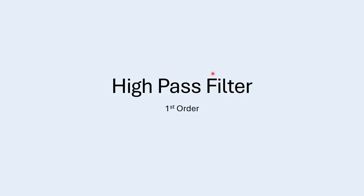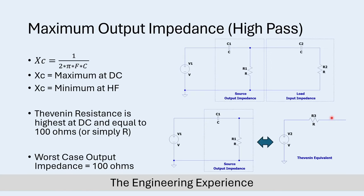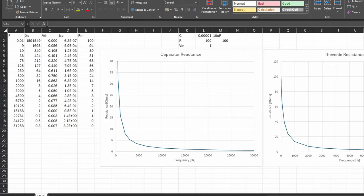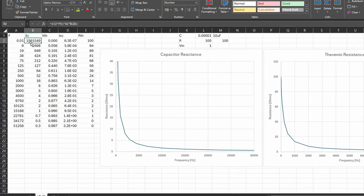Now let's look at the high-pass filter. In a high-pass filter, the capacitor comes first and then the resistor goes in parallel with the load. I've drawn the circuit with a driving RC filter and a load RC filter, as described in the question. We'll focus first on the output impedance. For the high-pass filter in Excel, I have frequency in column A from 0.01 Hz up to about 50,000 Hz, and in column B I've calculated the capacitor reactance.